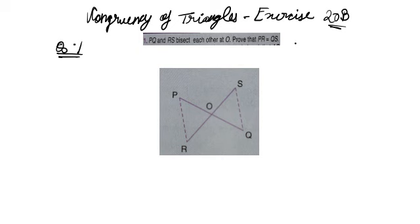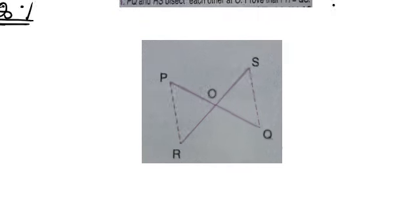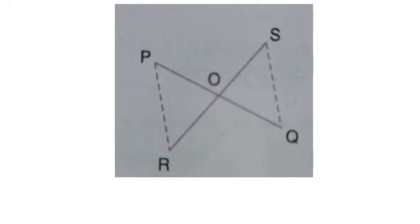The question says: PQ and RS bisect each other at O. Prove that PR equals SQ. You can see that two lines are given to us.